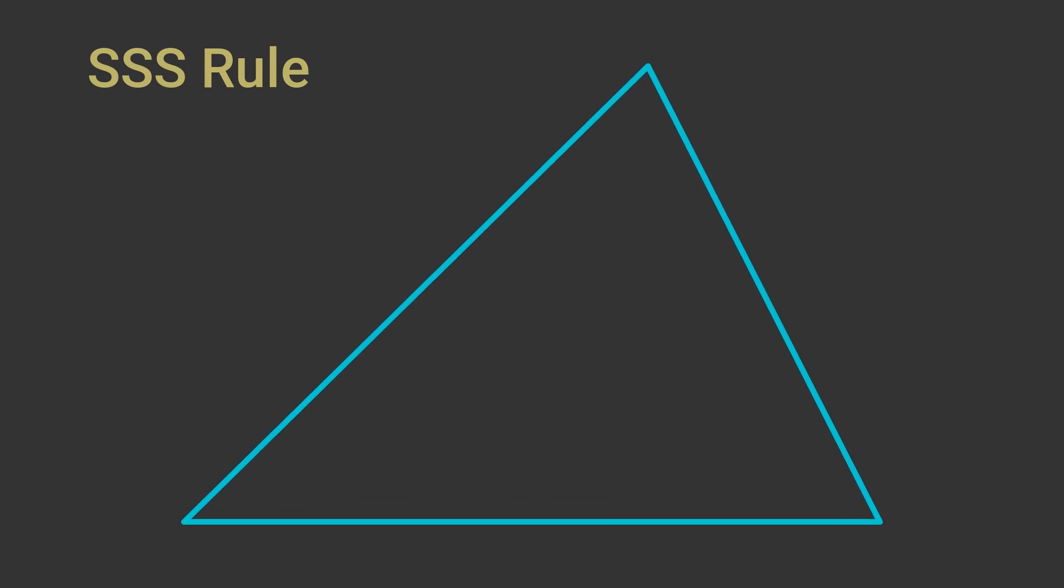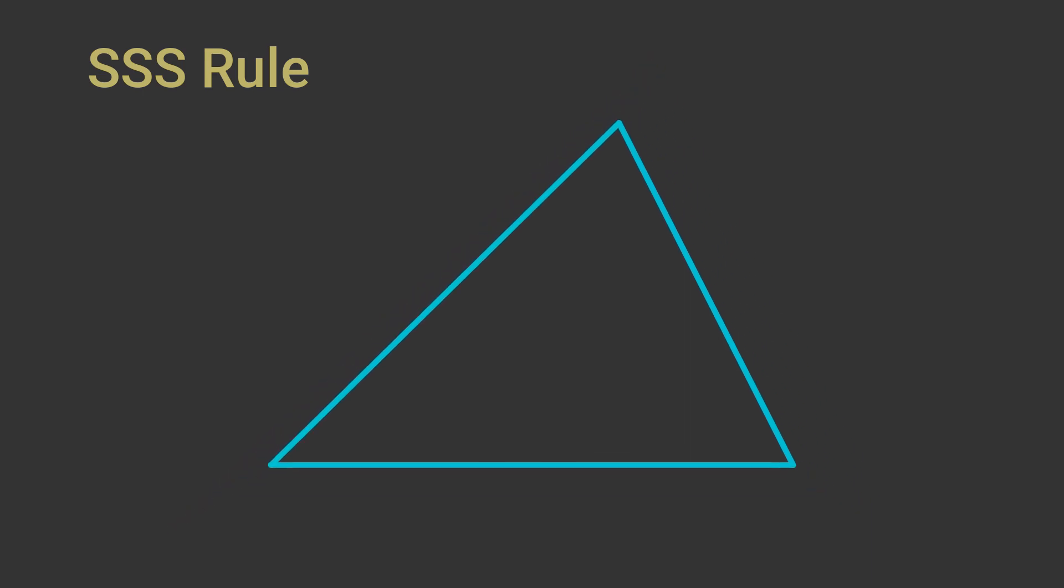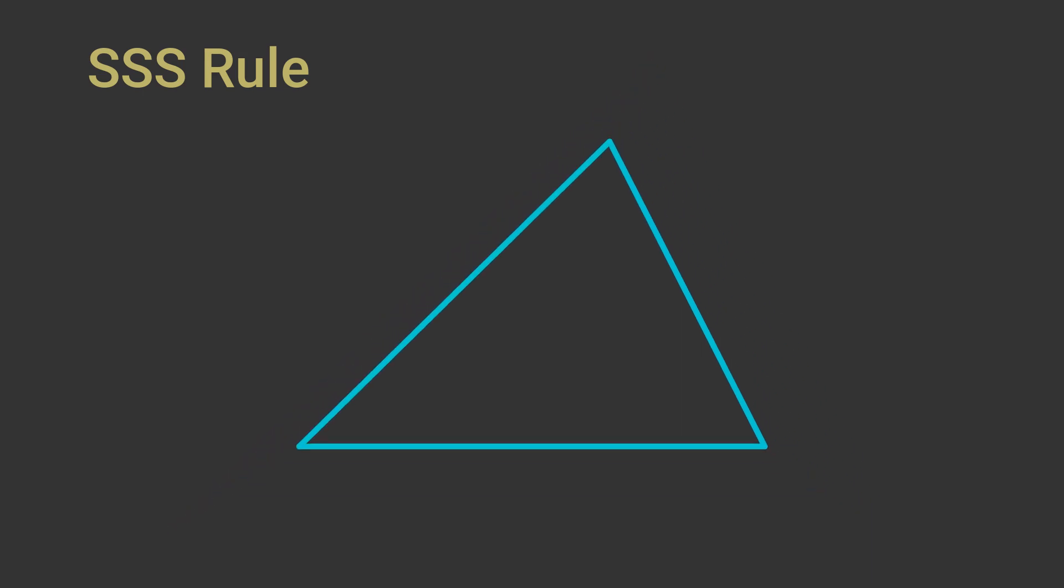If we change the lengths of the lines by equal proportions, the angles don't change, so the triangles remain similar. We will prove this in a later video. See the link below.